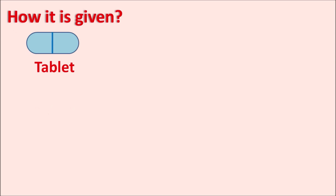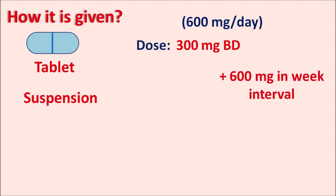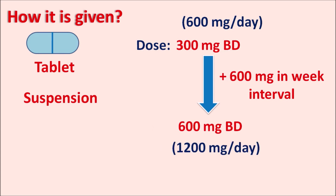Oxcarbazepine is available as tablets, extended-release tablets, and oral suspension. The initial dose is 300 mg given twice daily, for a total of 600 mg per day. The dose can be slowly increased in increments of 600 mg at weekly intervals, up to 600 mg twice daily (1200 mg per day), and further up to a maximum of 2400 mg per day.